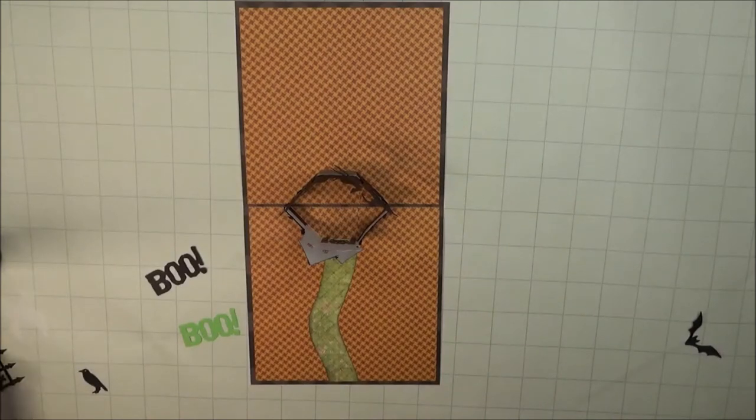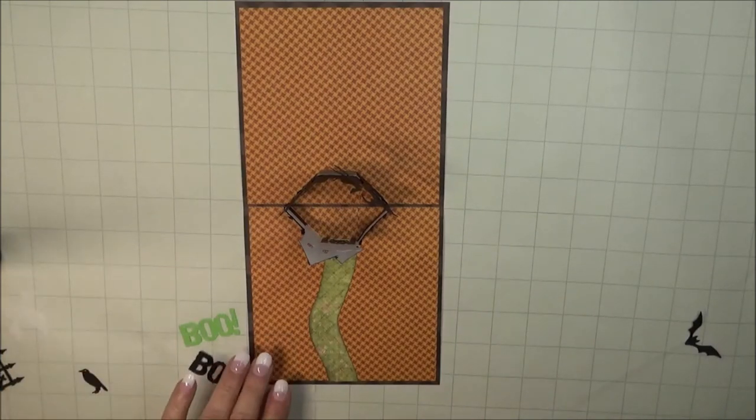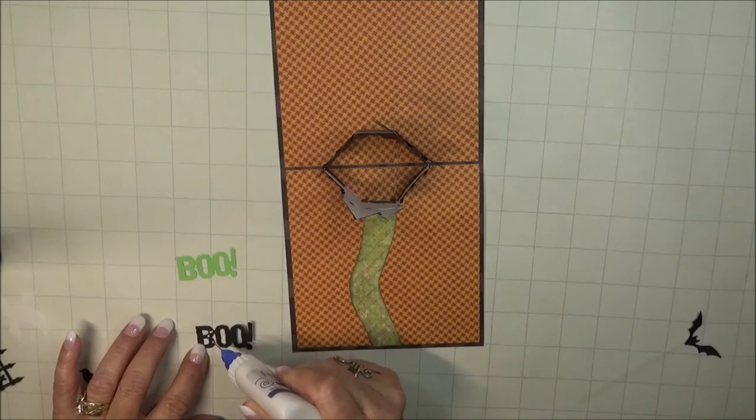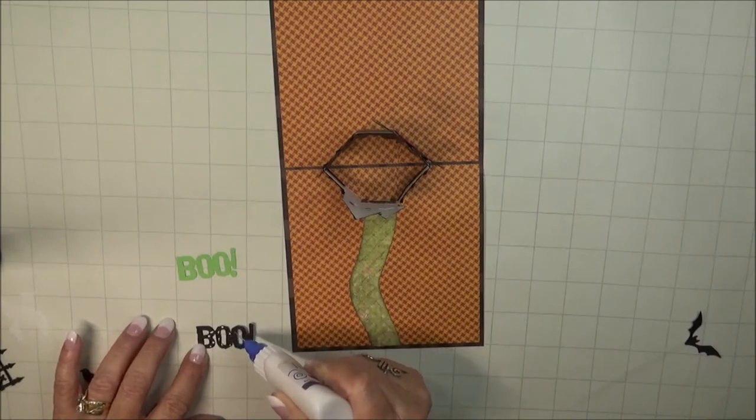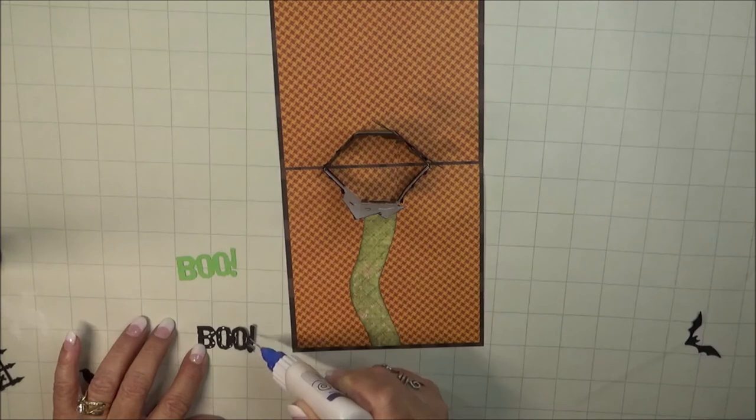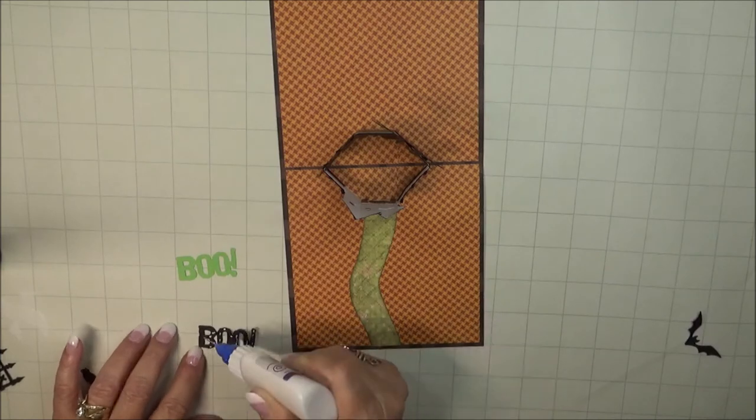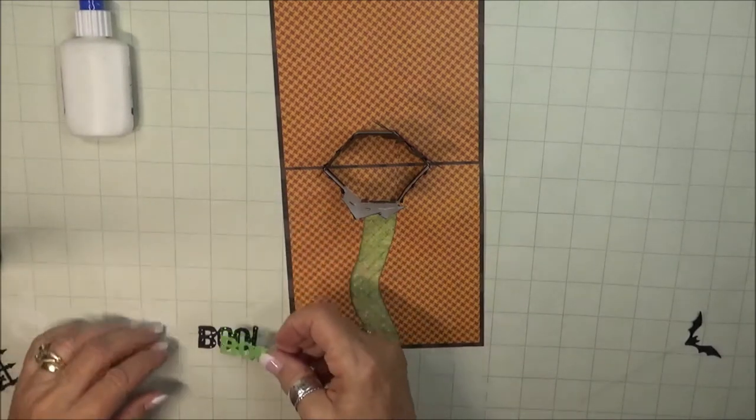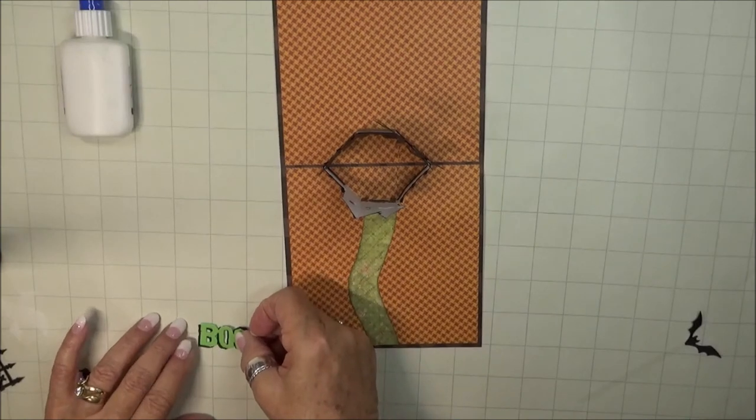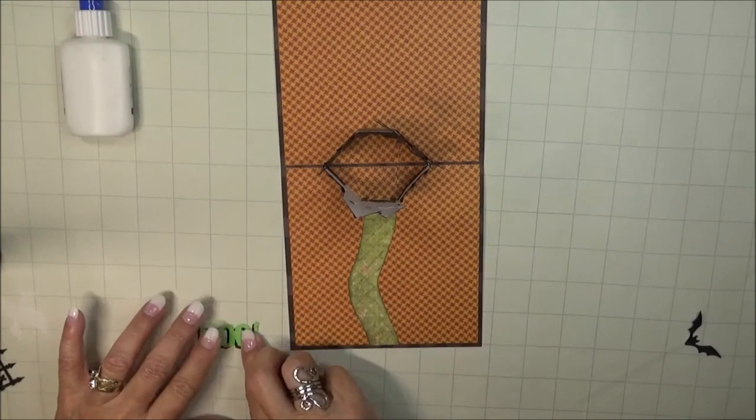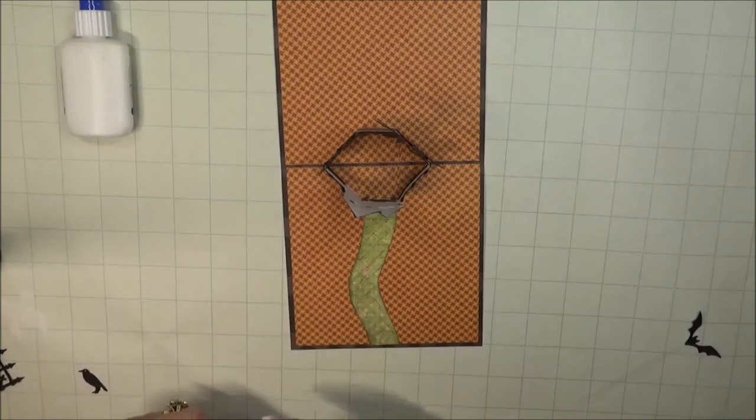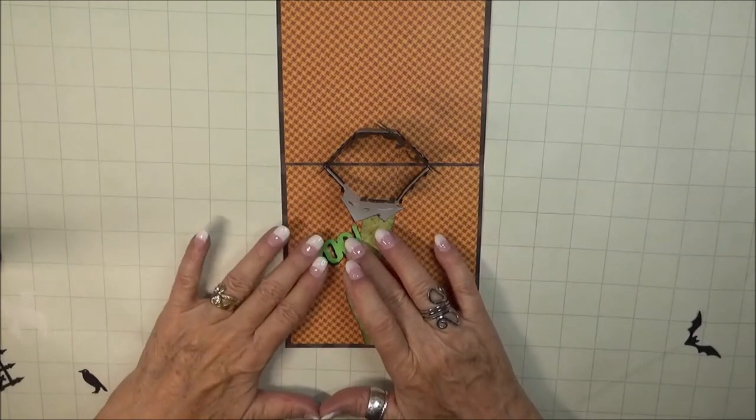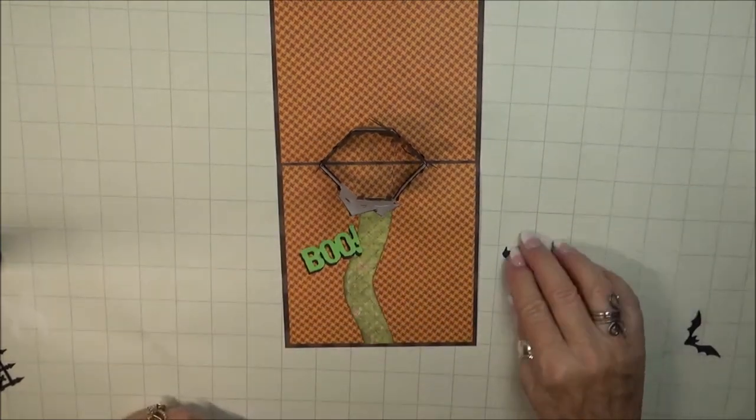For me, adding the embellishments is what makes the card come to life. I have two boos cut here from the Halloween Elements set, and I'm going to glue them together with the black on the bottom, making it appear to be a shadow. Okay, how cute is that?